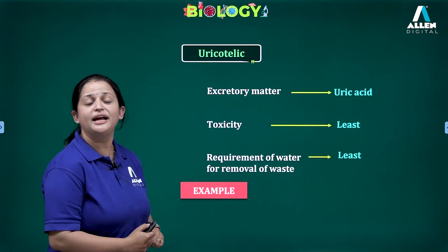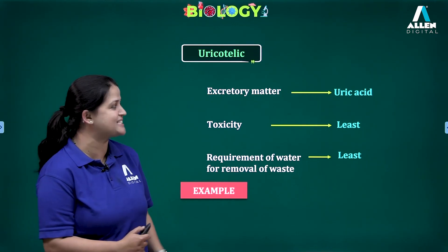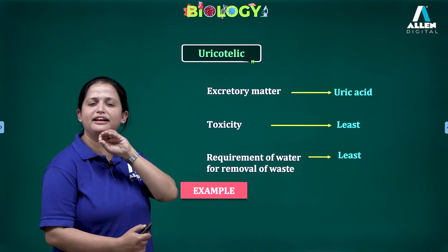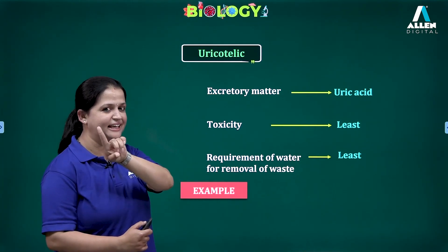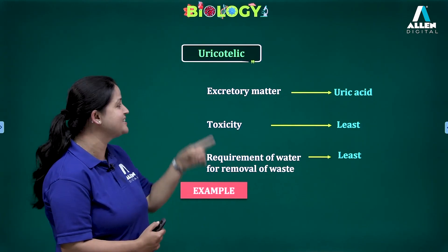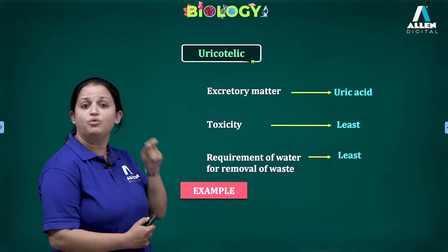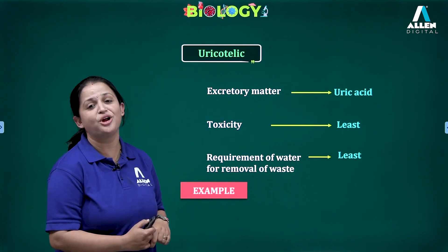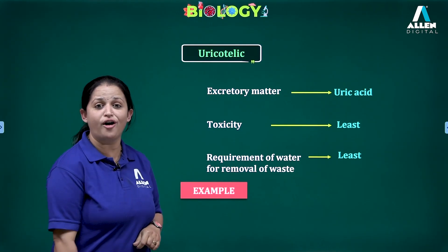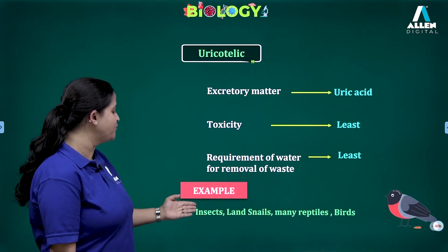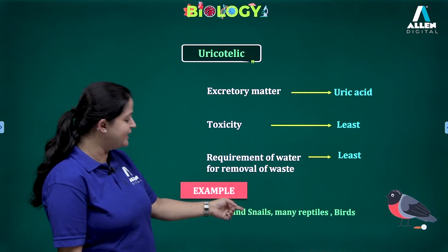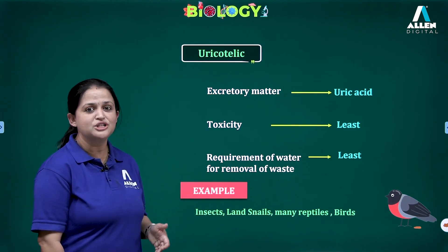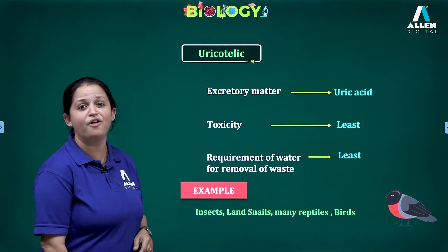The third type is uricotelic. In uricotelic animals, the type of waste material excreted is uric acid. The toxicity level is the very least — ammonia is highest, urea is medium, and uric acid has the least toxicity. The amount of water required to remove uric acid is also very least. Examples of uricotelic animals include insects, land snails, many reptiles, and birds. In them, removal of nitrogenous waste material is in the form of uric acid.